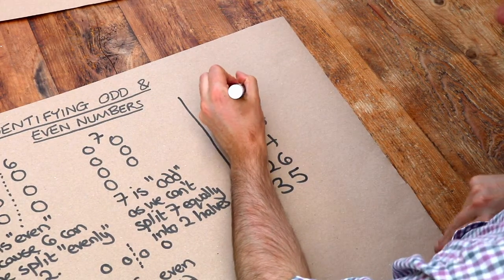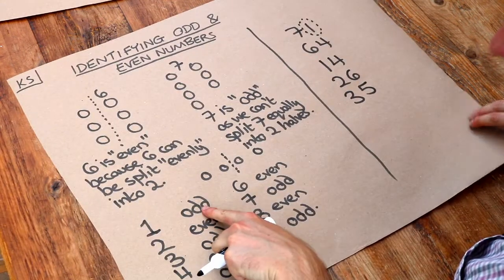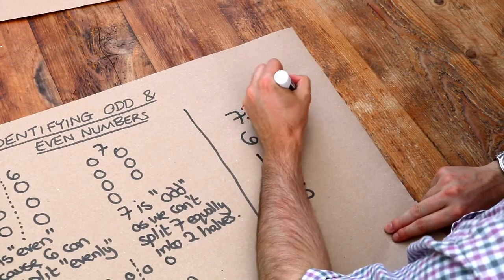Now if we just look at that last digit, look, this last digit is 1. Now 1 is odd. And therefore 71 would also be odd.